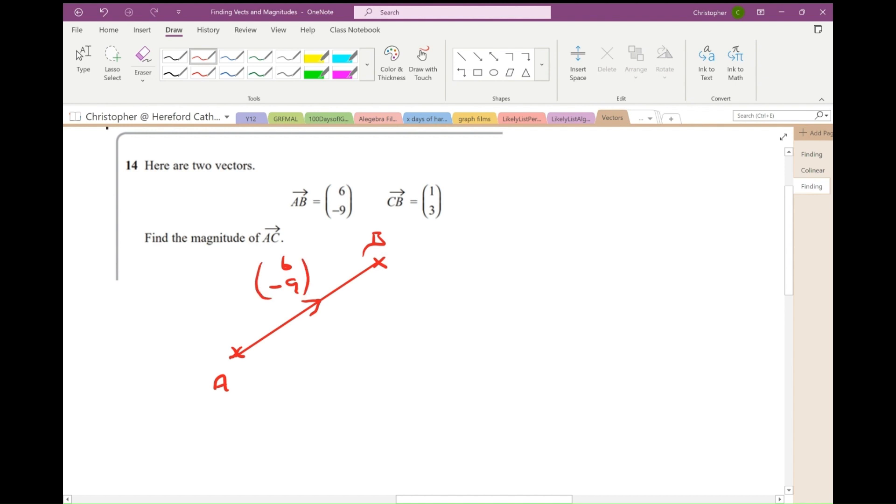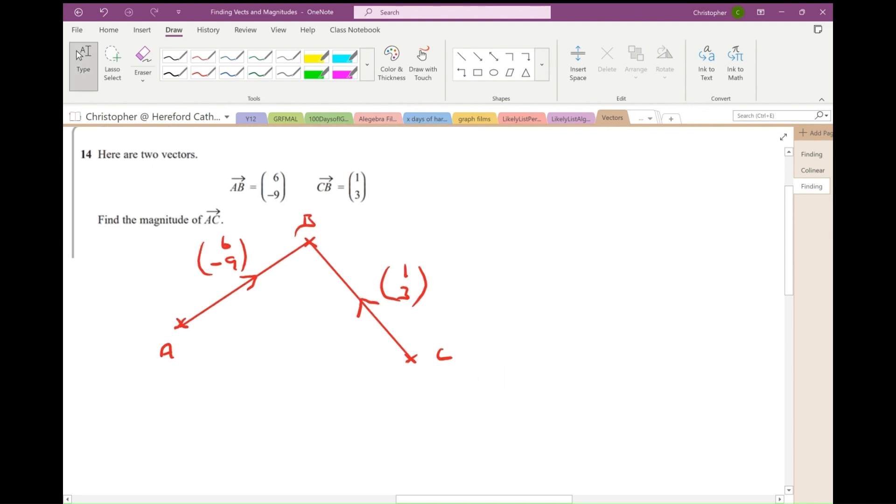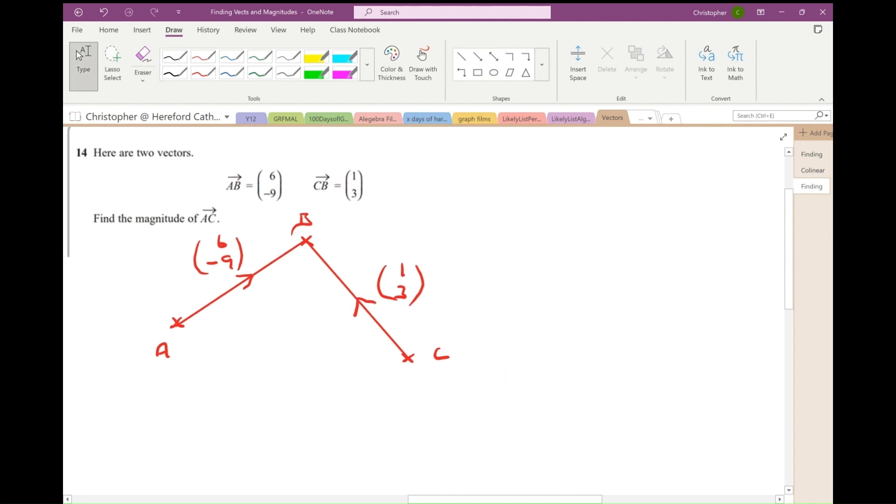Now, I also know the vector CB. So there's obviously a point C somewhere. I'll put the point C here. Okay, and let's draw that line there. Now, this is the vector CB. So be careful. It's the vector going from C to B. And that's (1, 3). And I'm asked to find the magnitude of AC. Well, I'm going to start off by finding the vector AC. And then I'll worry about its magnitude. So if I was going from A to C, I would go AB. And then I'll add on B to C.